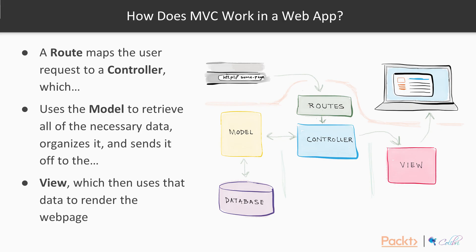So how does MVC work in a web app? We start with a router, which maps the user request taken from the URL to a controller. This then uses a model to retrieve all of the necessary data. It organises it, formats it, whatever it needs to do, and sends it off to the view, which then uses that data to render the web page.